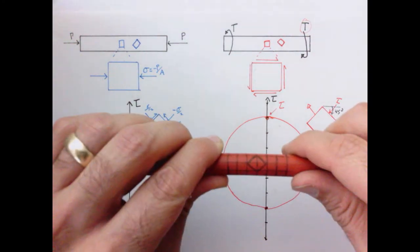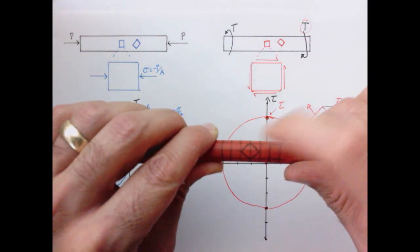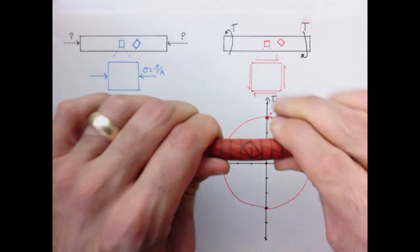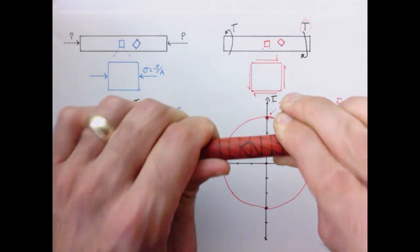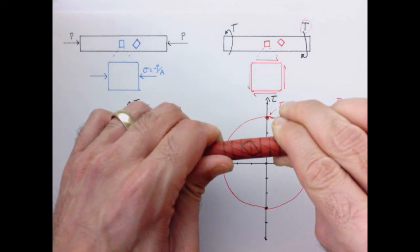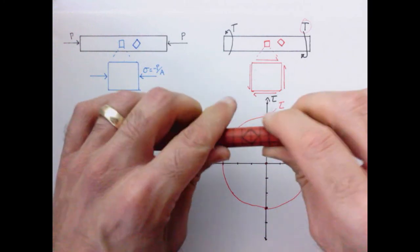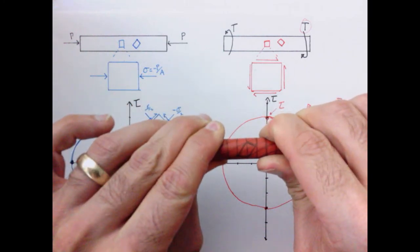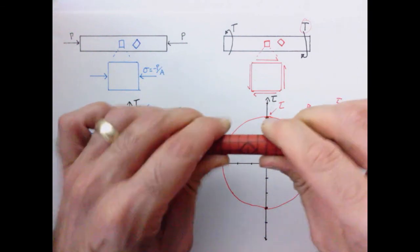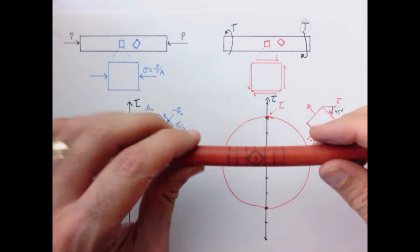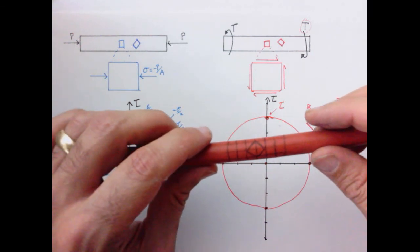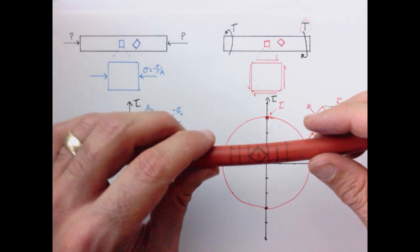So here's our rubber model with our grid lines. And here in the middle, I have a square that's drawn at that 45 degrees. And when I twist it, we see that it maintains its rectangular shape, but it elongates in one direction and compresses in the other. And again, when I twist it this way, the effect is the same. It's just kind of reversed. And so this could have an impact on failure of materials if we have materials which are weaker under either tension or compression than shear.